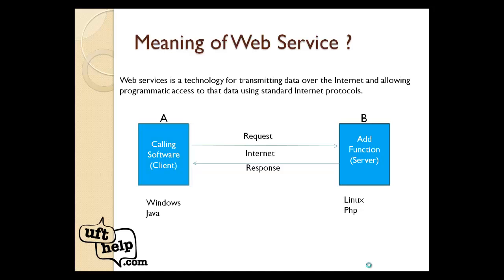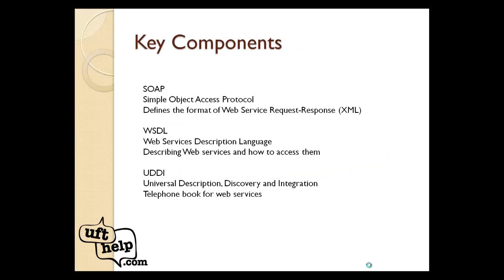That's how we basically use web services — it provides interoperability, meaning it is language-independent and platform-independent. Now let's discuss the key components of a web service. First is SOAP — Simple Object Access Protocol. A protocol is a way of communication: how the request is sent from application A to application B and how the response is received. SOAP defines the format of that request and response model and uses HTTP protocol for transmitting information.